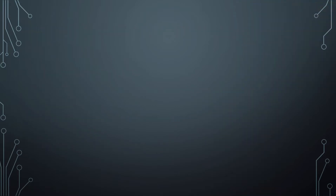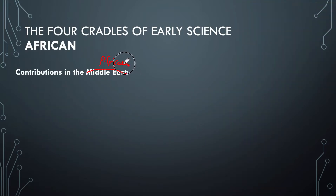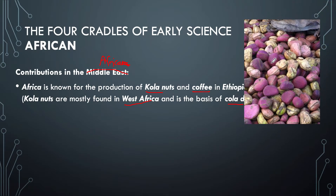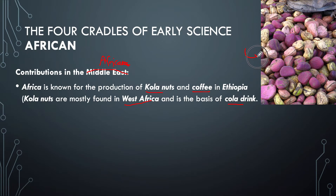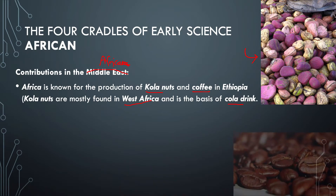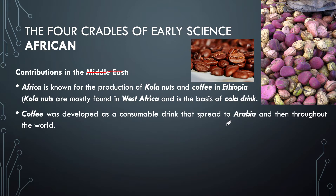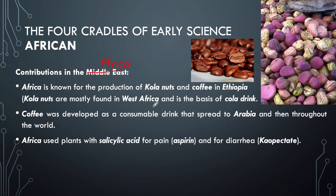Now for Africa — what are the contributions of Africa to the early sciences? Africa is known for the production of cola nuts and coffee in Ethiopia. Cola nuts are mostly found in West Africa and are the basis for the cola drink — you know, Coca-Cola and other cola drinks. Coffee was developed as a consumable drink that spread to Arabia and then throughout the world.